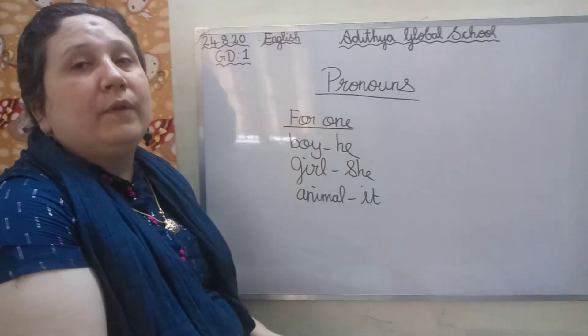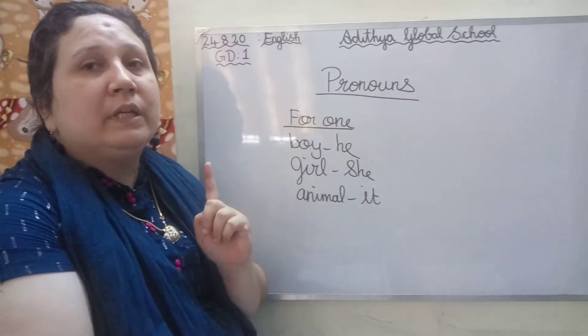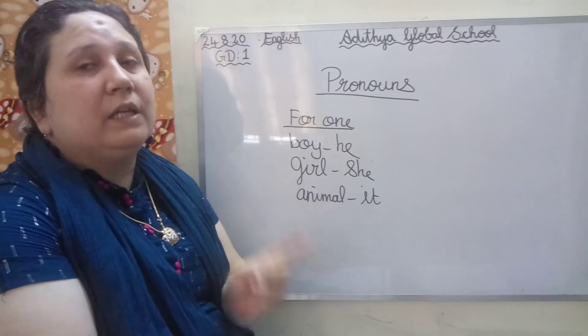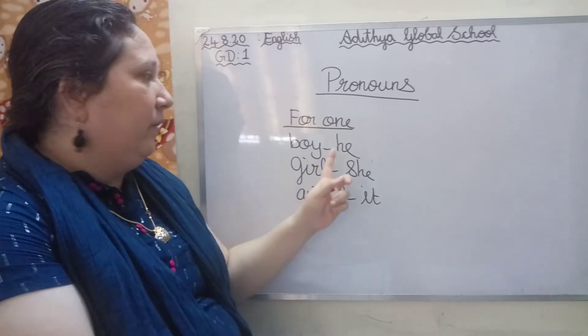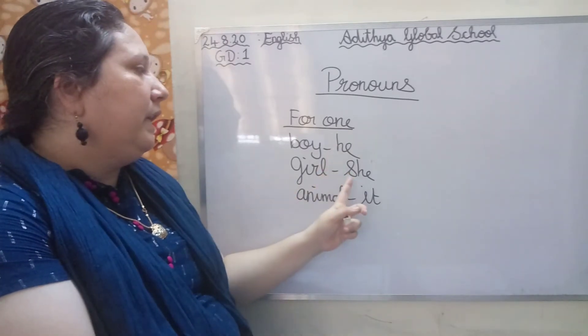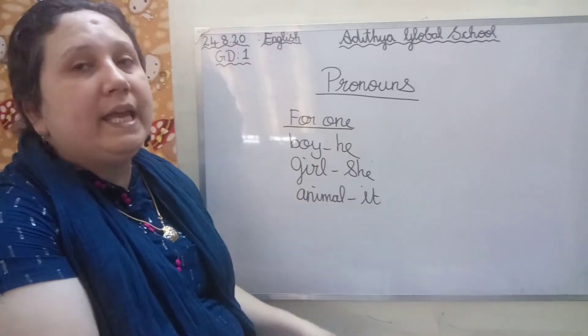When we are talking about a single person, or single thing, or single animal, we use he, she, or it.